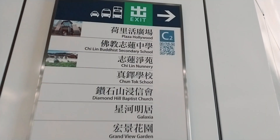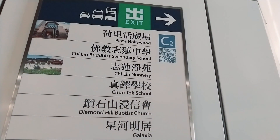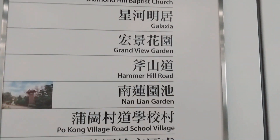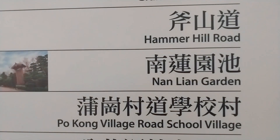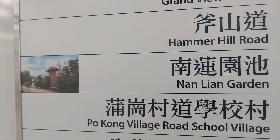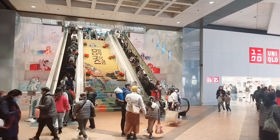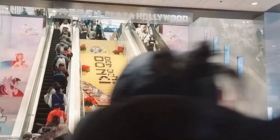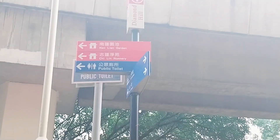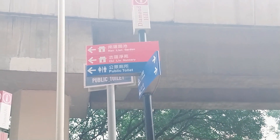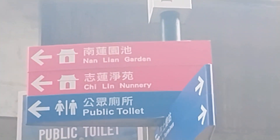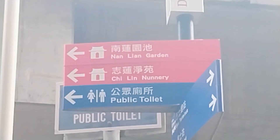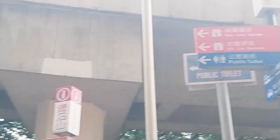Let's go to Exit C2, Nanlian Garden. Then outside of Exit C2 is Hollywood Plaza, but we have a right turn here. You can see the arrow at Nanlian Garden is on top.